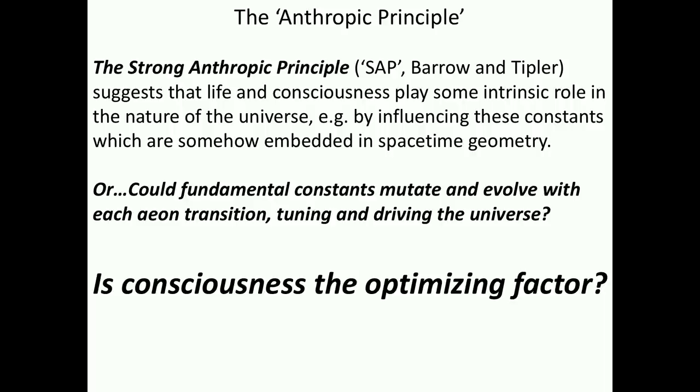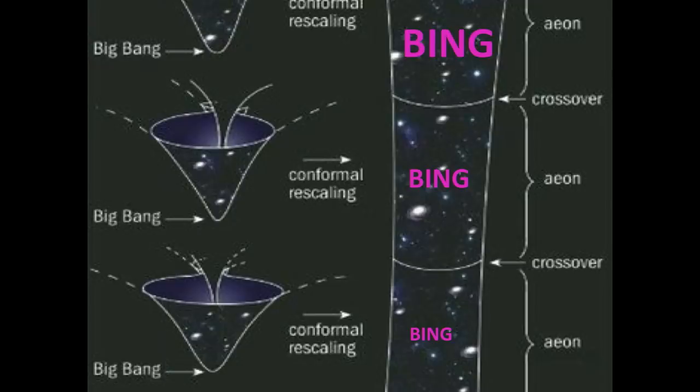The universe itself is actually evolving and mutating from eon to eon, like a rebirth of a human. Reincarnating, you might say. And consciousness could be the optimizing factor. So presumably there was consciousness in the previous eons, as we see on the right. And perhaps with each transition, the properties, the fundamental constants are being tuned to optimize consciousness in the next eon.